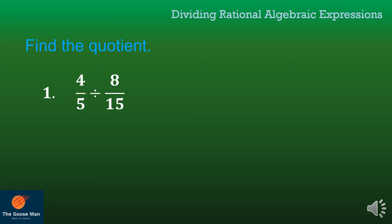If I have 4 over 5 divided by 8 over 15, so 4 over 5 is our dividend while 8 over 15 is our divisor. I'll copy 4 over 5, the division symbol now becomes multiplication, and get the reciprocal of 8 over 15, which is 15 over 8.